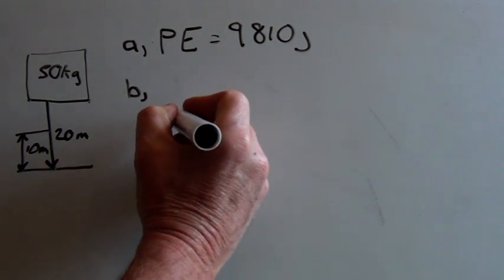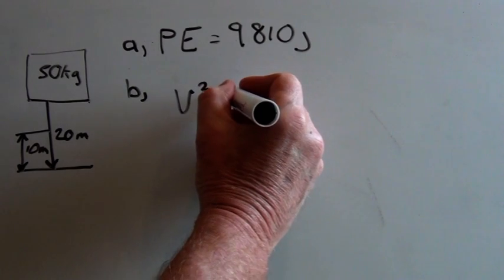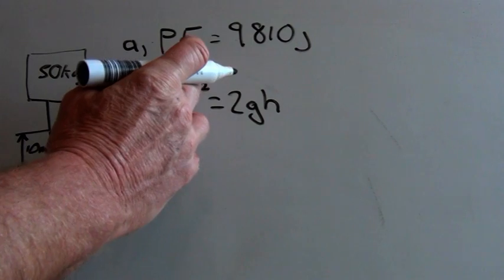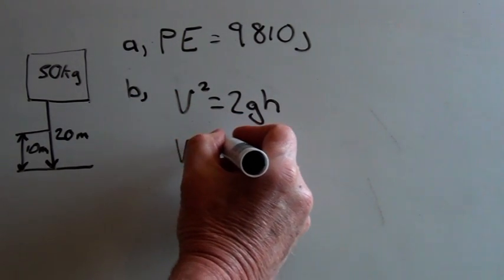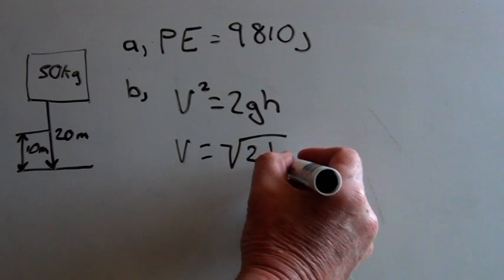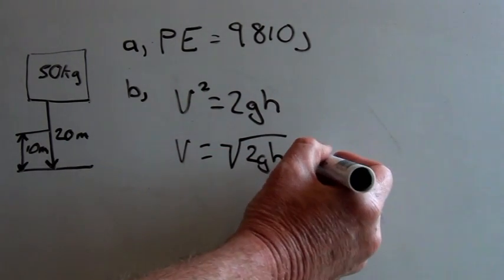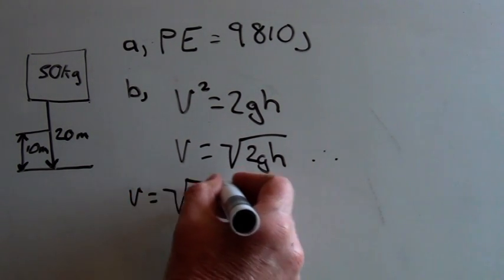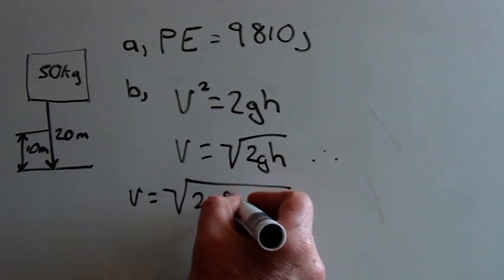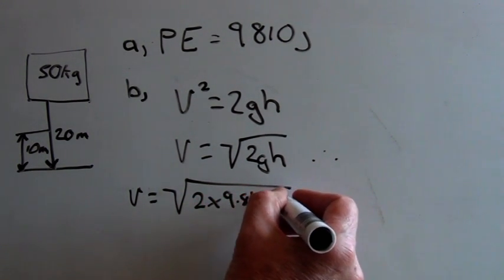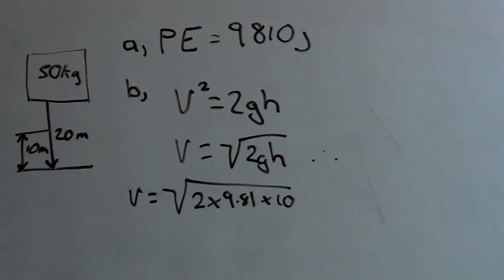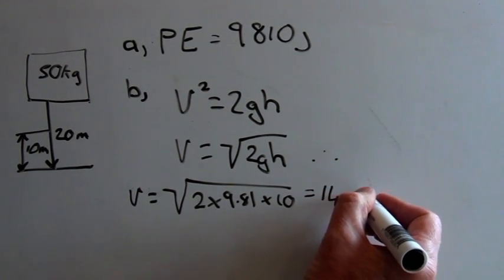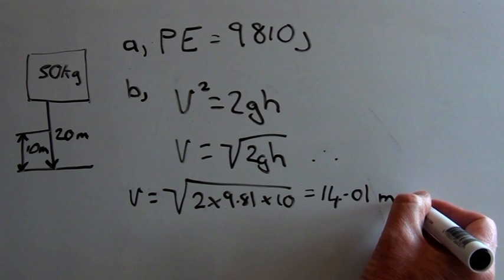So using V squared equals 2GH, we can rearrange this to get rid of the square, so we say V equals the square root of 2GH. Therefore V equals the square root of 2 times 9.81 times 10, and this equals 14.01 meters per second.